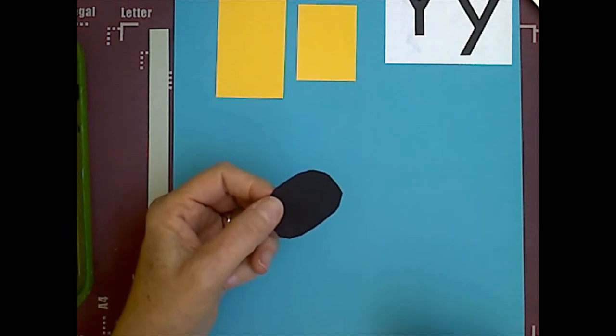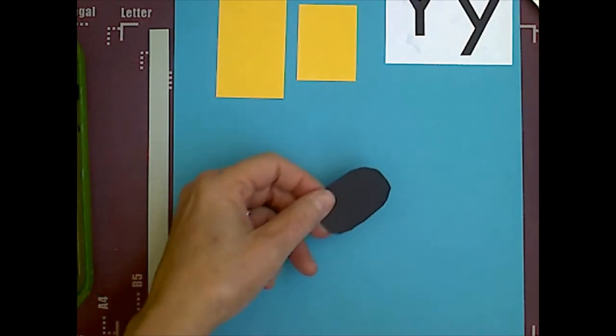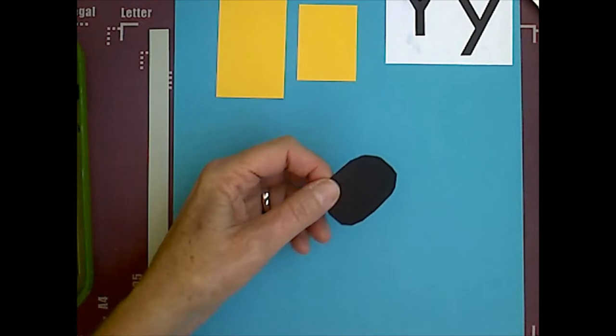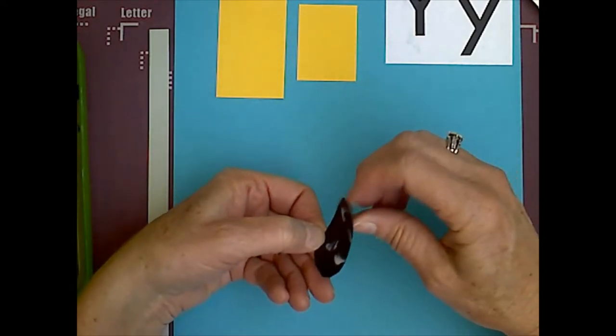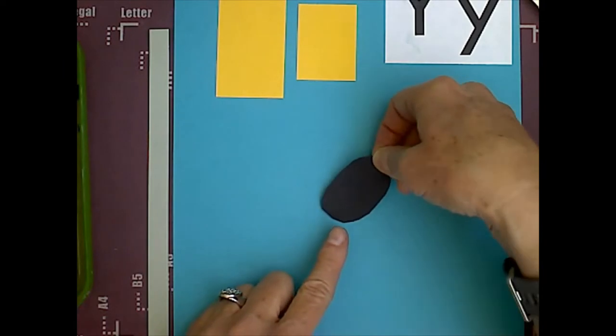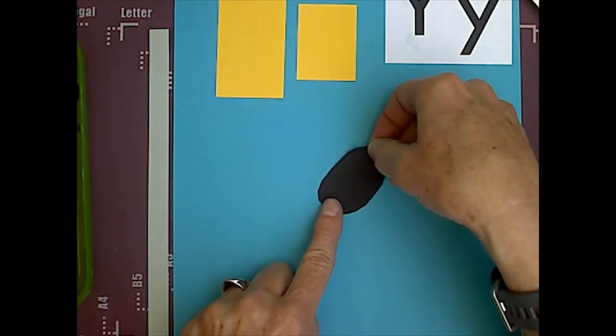I am going to glue this in this direction. I'm going to put some glue dots on my thing, and I am going to glue it, kind of, facing that direction, on a diagonal.